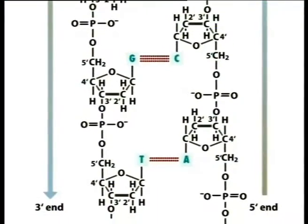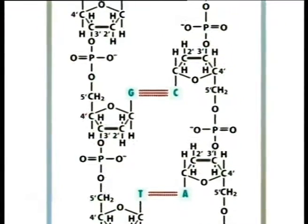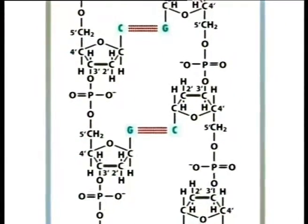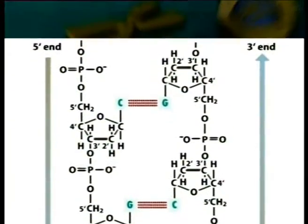All the phosphodiester linkages in DNA strands have the same orientation, giving each linear nucleic acid strand a specific polarity. The terminal nucleotide at one end of the chain has a free 5' group, and the terminal nucleotide at the other end has a free 3' group. It is conventional to write nucleic acid sequences in the 5' to 3' direction, that is, from the 5' terminus at the left to the 3' terminus at the right.